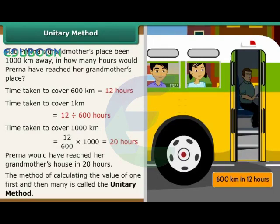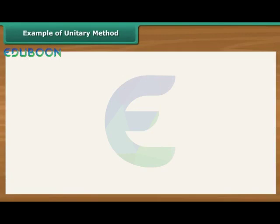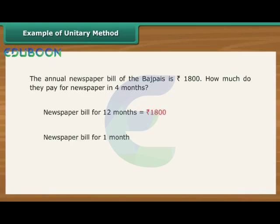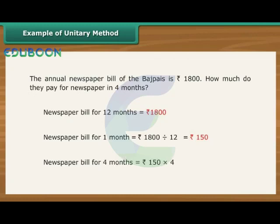The method of calculating the value of 1 first and then many is called the unitary method. Example: The annual newspaper bill of the Barge family is Rs. 1800. How much do they pay for newspapers in 4 months? Newspaper bill for 12 months equals Rs. 1800. Newspaper bill for 1 month equals Rs. 1800 by 12, that is Rs. 150. Newspaper bill for 4 months equals Rs. 150 into 4, which is equal to Rs. 600.